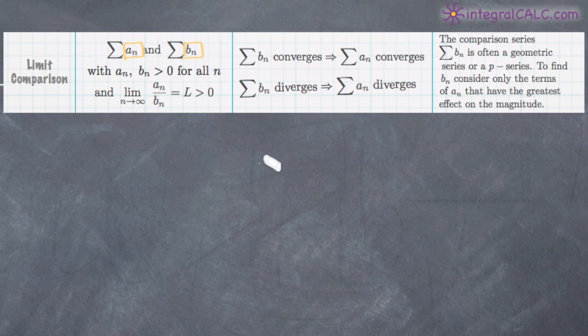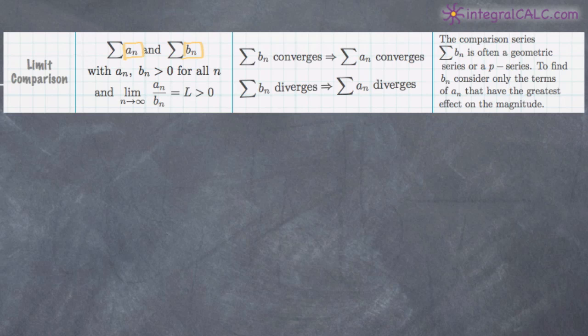If those things are true, then we can conclude that whatever happens to b sub n also happens to a sub n. So if b sub n converges, then a sub n also converges. And similarly, if b sub n diverges, then a sub n is also going to diverge.